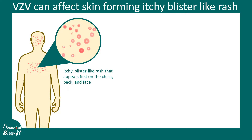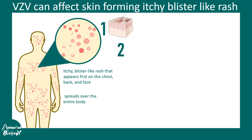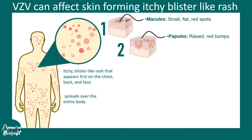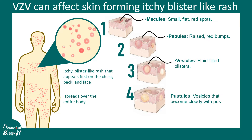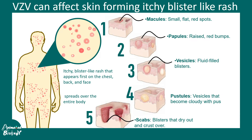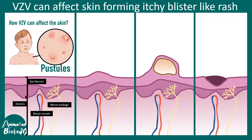These rashes are characteristic: initially they appear on the chest, face, and sometimes the back. They are itchy blister-like rashes with specific morphology. Initially the rash is a macule — a small flat red spot — then it becomes a papule, a small red bump. Eventually it may become a vesicle, a fluid-filled blister, then a pustule filled with pus, and finally scabs form when the blisters dry out and leave a crust. One can have all these stages simultaneously.